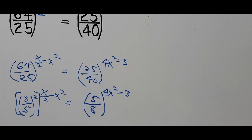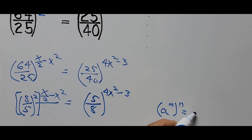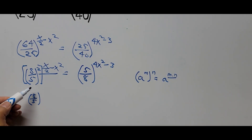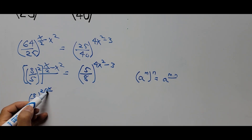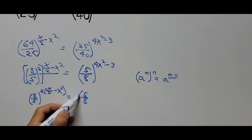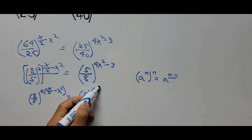On the left side of the equation, the exponent can be reduced using one of the laws of exponents: a to the m, raised to n, equals a raised to m times n. So we multiply the exponents. The left side can now be written as 8 divided by 5, to the power of 2 times the quantity x over 2 minus x squared, and the right side is 5 over 8 to the power of 4x squared minus 3.